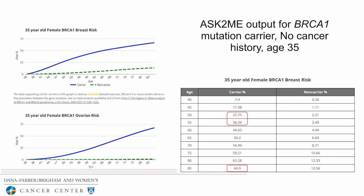We always discuss with patients how their risk changes with age, using a tool called Ask2Me. This tool models a patient's risk based on the latest research data, considering their age, and can aid in decision-making — particularly if a woman is considering prophylactic surgery. For example, for a 35-year-old woman with a BRCA1 mutation, the risk at age 40 is only 7.4%, but that risk increases significantly in the 50s and 60s. These charts show both breast cancer risk and ovarian cancer risk with age.